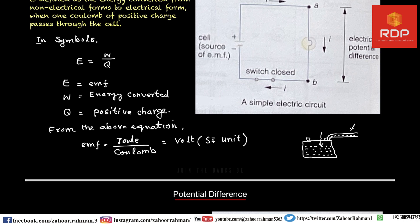Let us now move towards the technical definition of electromotive force. Before that, I want to tell you that a battery is a source of EMF. A source of electromotive force is a device which is capable of converting non-electrical energy into electrical energy. Examples of sources of EMF are electrical cells, thermocouples, and generators. We will discuss all these in greater detail.